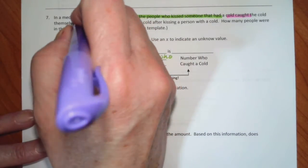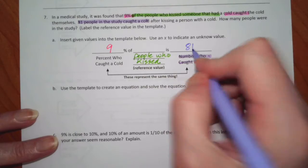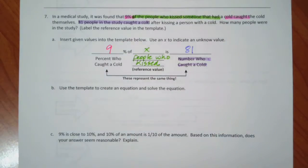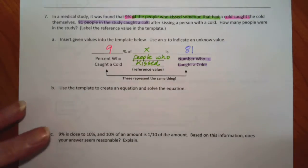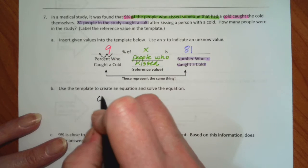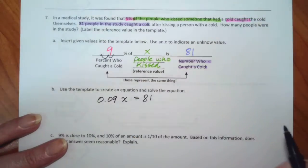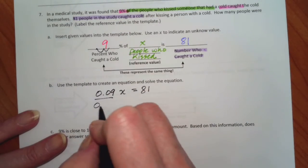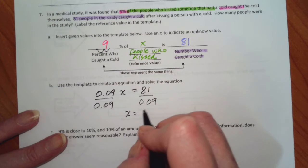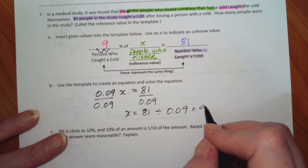81 people caught a cold, so that is going to be the number who caught cold. So this is going to be our 81. If I filled out two of the three blanks, the third blank has to be our variable. So 9% becomes 0.09 times x is 81. Divide by 0.09, so x is 81 divided by 0.09, which is 900.